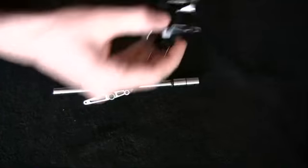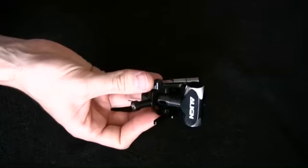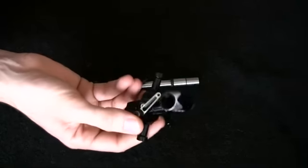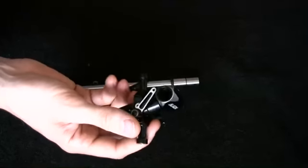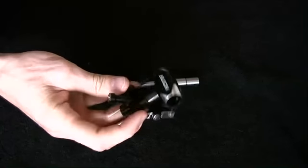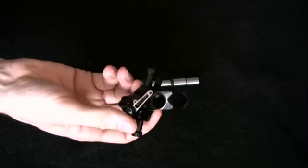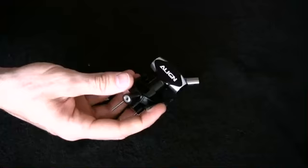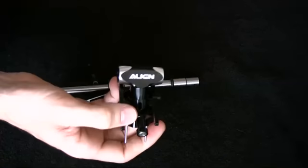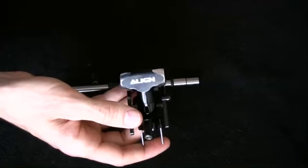The same thing goes for the rotor head. You can see here this is the main head block and the flybar seesaw and the upper mixer arms. This is exactly as you would expect to see on a 500 or 600 or 700. Align haven't modified the design at all here.